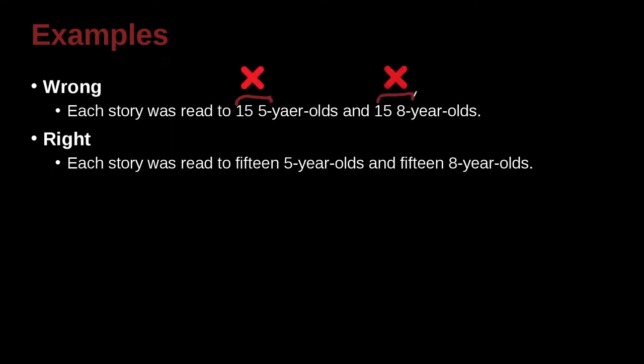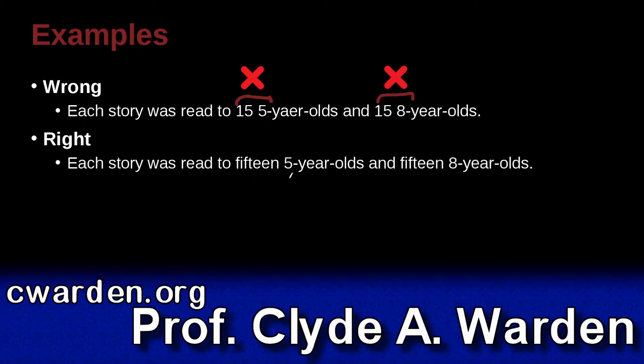This 15 and 8 together, that's a little bit weird, easy to get misunderstanding like 155, 158. So what do we do? We need to change one of them to be spelled out, and in this case, because it's a hyphen, this is kind of a group 5-year-olds, and this is a group 8-year-olds.